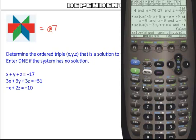Then I'm going to type in my three equations. So x plus y plus z equals negative 17. Out of the alpha lock, when you type in your equations, x plus y plus z equals negative 17.